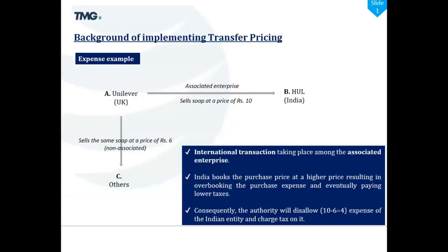Let's start with the background using an expense example. There is Unilever UK and HUL in India — both are associate enterprises. Unilever UK sells soap to the Indian associate enterprise at rupees 10, while the same product is sold to a non-associated enterprise at rupees 6. This disparity in pricing results in paying lower taxes in India. The consequence is that the authority will disallow the expense of the Indian entity and charge tax on it.